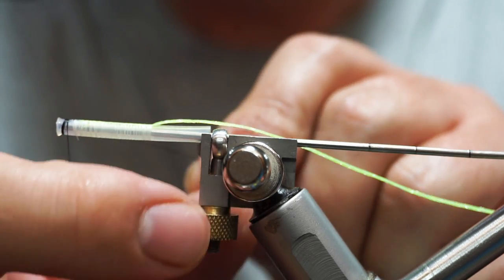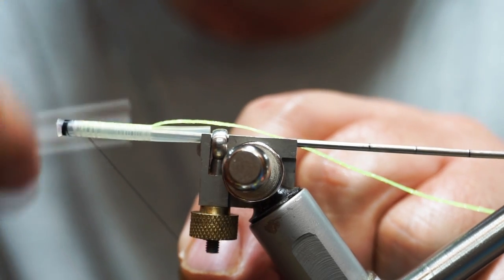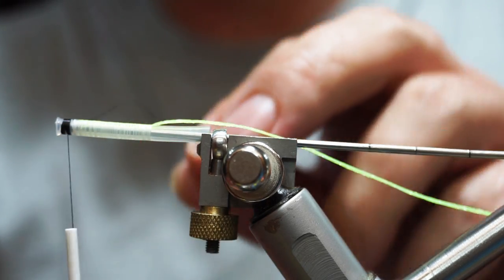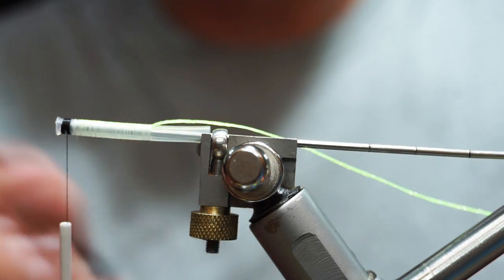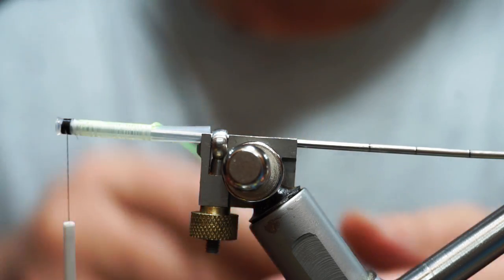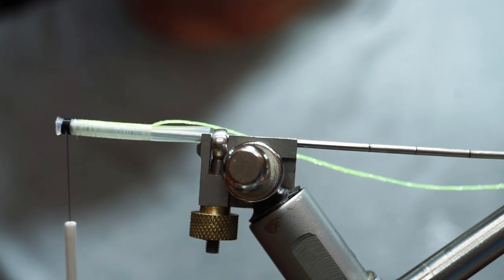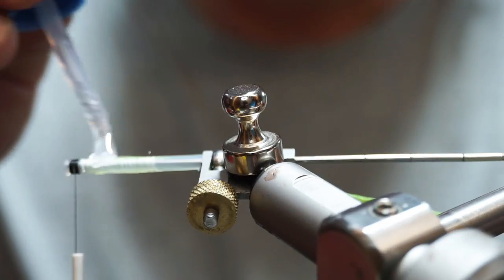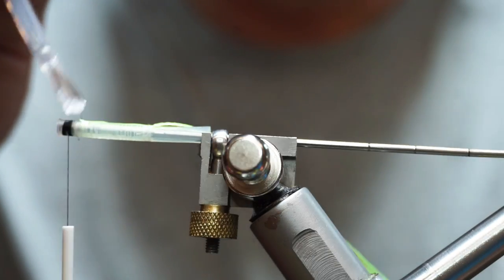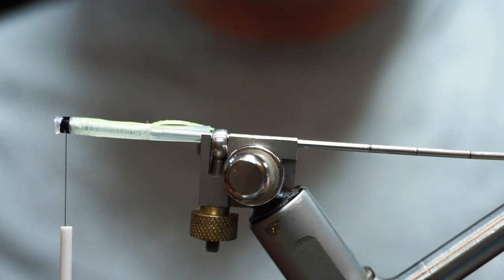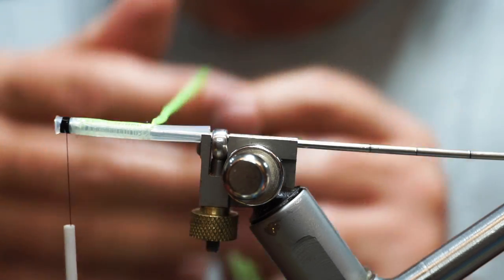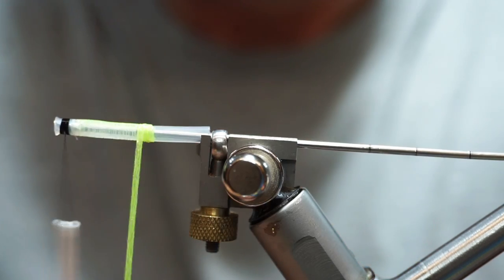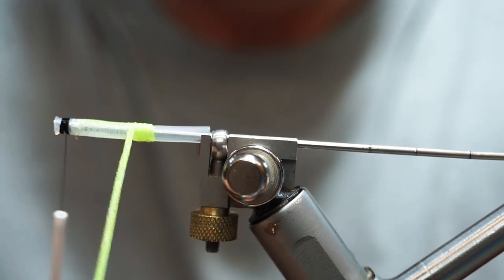I'll now attach my black tie-in thread. Essentially all you're going to do here is a head's length. For a bit of added security I'm going to take a good clear varnish, this one's Sally Hansen hard as nails, and just put a good coat of that onto our underbody and then I'm going to wrap my braid into that.